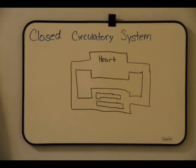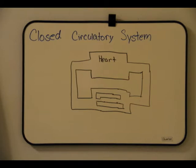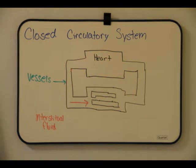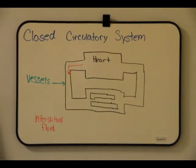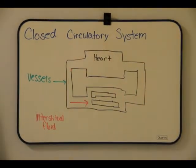In a closed circulatory system, blood is confined to vessels and is distinct from the interstitial fluid. Many animals with a closed circulatory system have more than one heart. Advantages of the open circulatory system include lower hydrostatic pressure, which is less costly in terms of energy expenditure, and it requires less energy to maintain because it lacks an extensive vessel system.